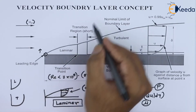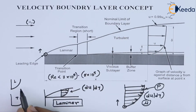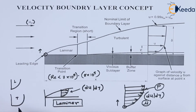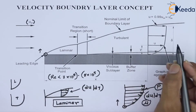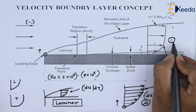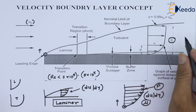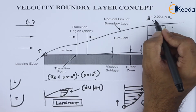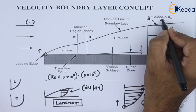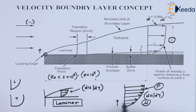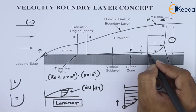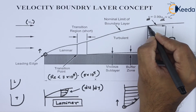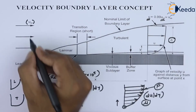This is the difference between the velocity profile in case of a laminar flow and in case of a turbulent flow. There is something called the boundary layer thickness, denoted as delta. The boundary layer thickness is nothing but the distance from the plate till which the velocity of the fluid particle is almost 0.99 times the velocity of the free stream.